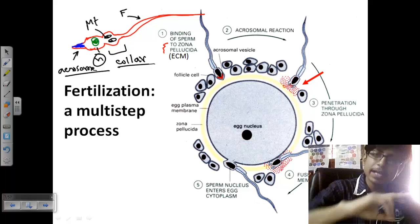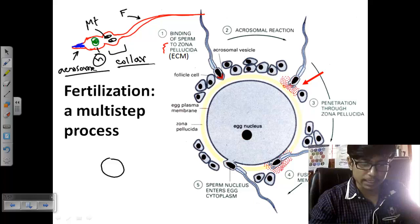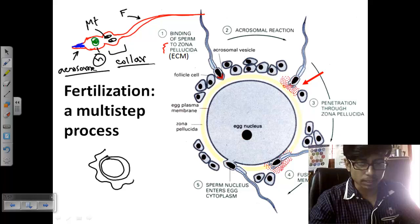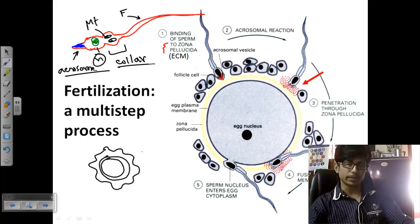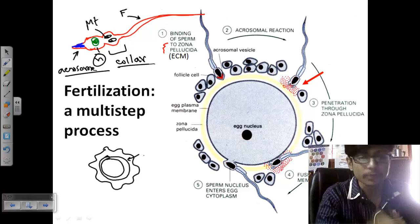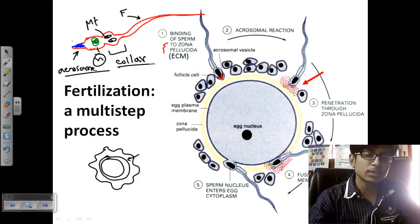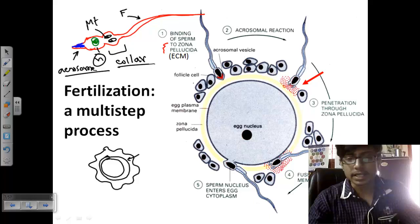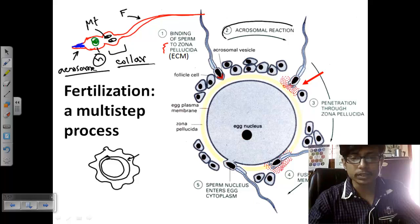The acrosome is filled with vesicles containing digestive enzymes. These enzymes can digest the vitelline membrane of the egg. The egg has a multi-layer structure: first a cell membrane, then a vitelline membrane, then a jelly-like coat outside. The jelly coat can be easily destroyed, but the vitelline membrane must be broken prior to the nucleus being released inside the egg cytosol. The enzymes in the acrosome accomplish this breakdown.